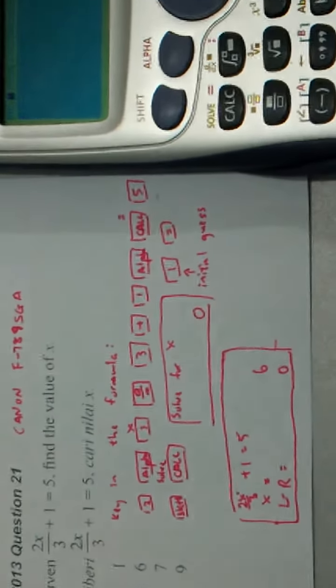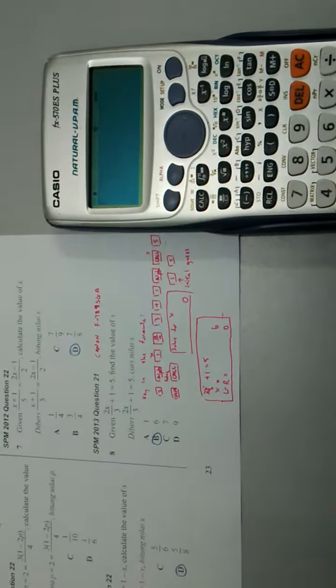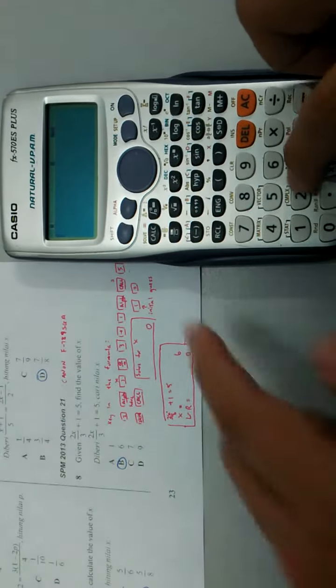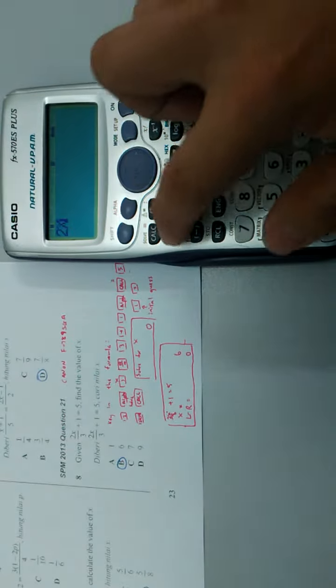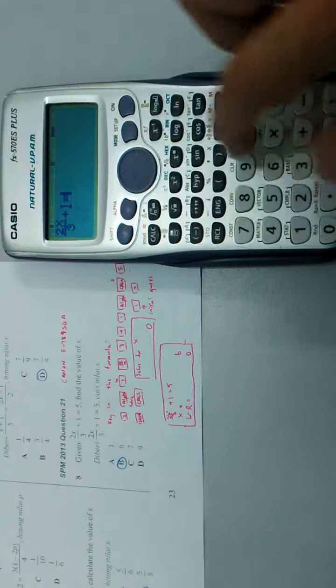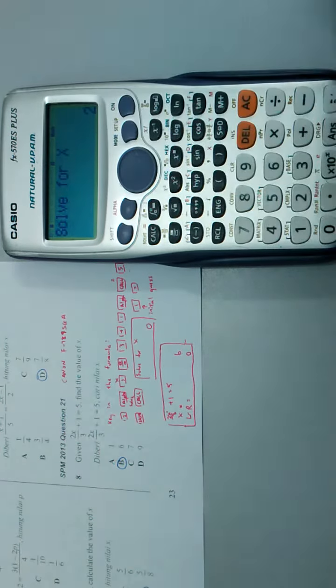So first, I key in the formula into the calculator. What I have is 2x/3 + 1 = 5, and then press shift solve.